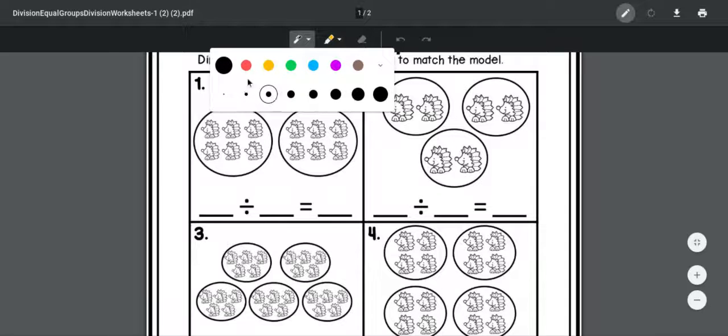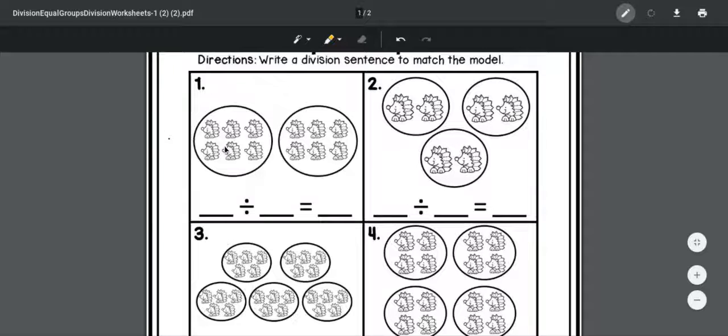So if I look here, I have one, two, three, four, five, six, seven, eight, twelve total looks like hedgehogs. And then you need to tell me how many groups they're divided into, which is one, two. So it would be 12 divided by 2. Now if you know the answer, you can go ahead and put it. And if not, your answer is just how many hedgehogs are in each circle. So 12 divided by 2 equals 6.